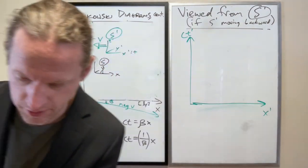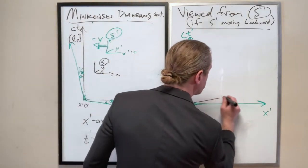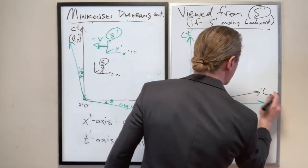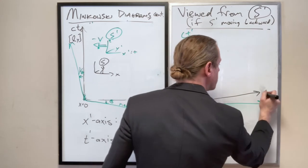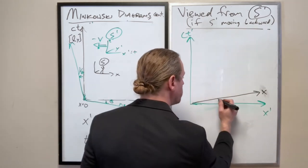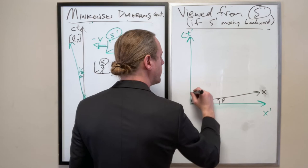And we see that this, let's see, I'll do it as black. This now just becomes the x-axis shifted by beta.